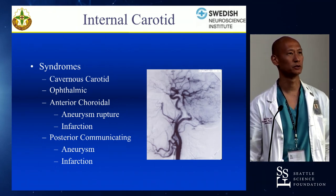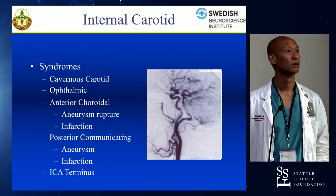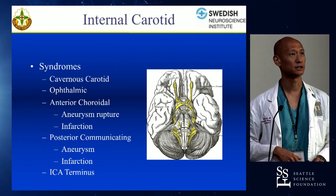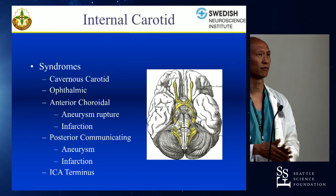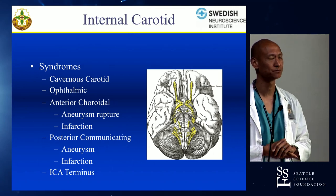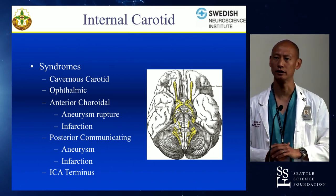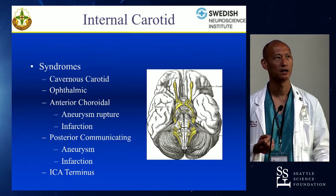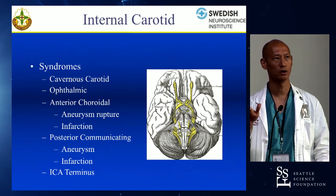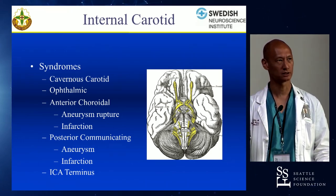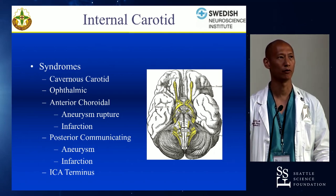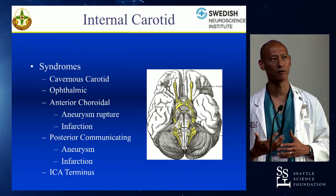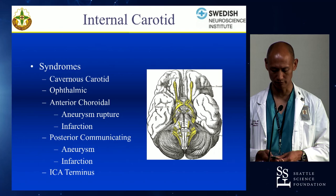Here's a picture of a persistent proatlantal artery. ICA terminus aneurysms: you have to be cautious that they can give off perforators, particularly on the posterior aspect of the ICA, supplying the anterior perforated substance. The A1 and M1 segments also give rise to lenticulostriate arteries, all of which go through the anterior perforated substance. The APS is a very important structure for both memory and behavioral aspects of personality.